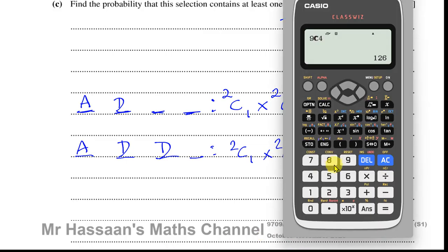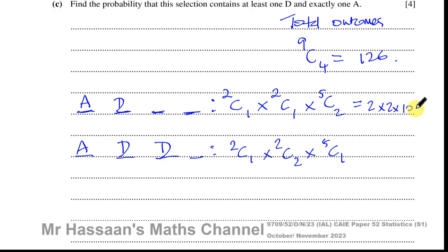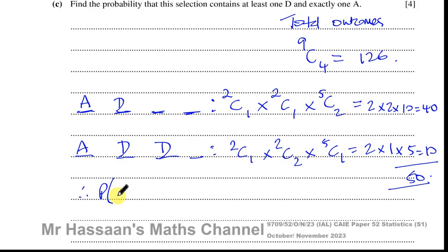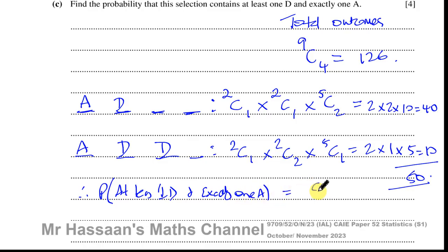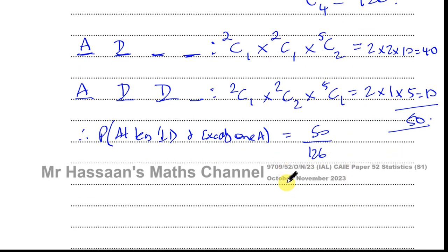So 5C2 is 10. For case 1: 2 times 2 times 10 equals 40. For case 2: 2 times 1 times 5 equals 10. Total favorable outcomes: 40 plus 10 equals 50. Therefore the probability is 50 over 126, which simplifies to 25 over 63. That is the answer to the last part of the question.